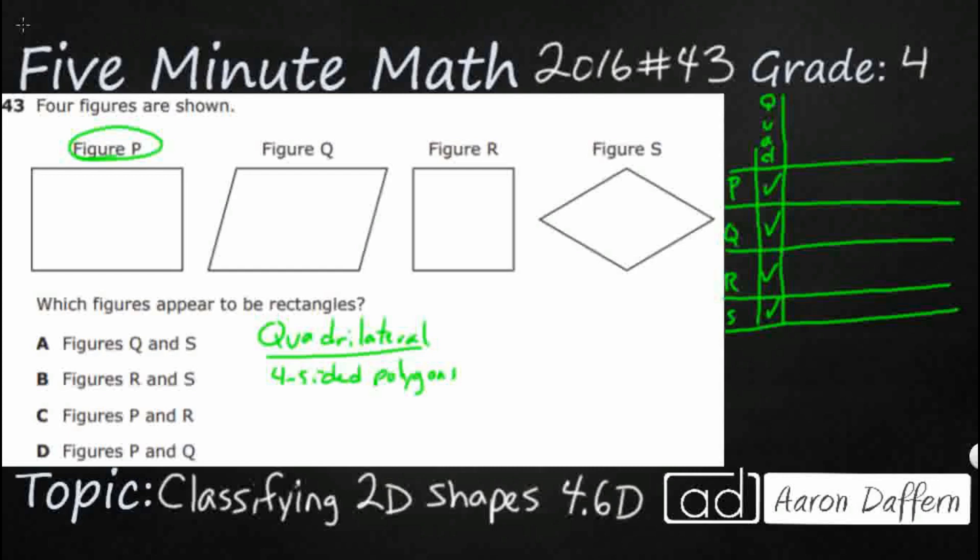Now next, within quadrilaterals are a type of quadrilaterals that are called parallelograms. So parallelograms are quadrilaterals. You see, I was kind of underneath that. Quadrilaterals that have two sets of, you guessed it, parallel sides. So two pairs of parallel sides.